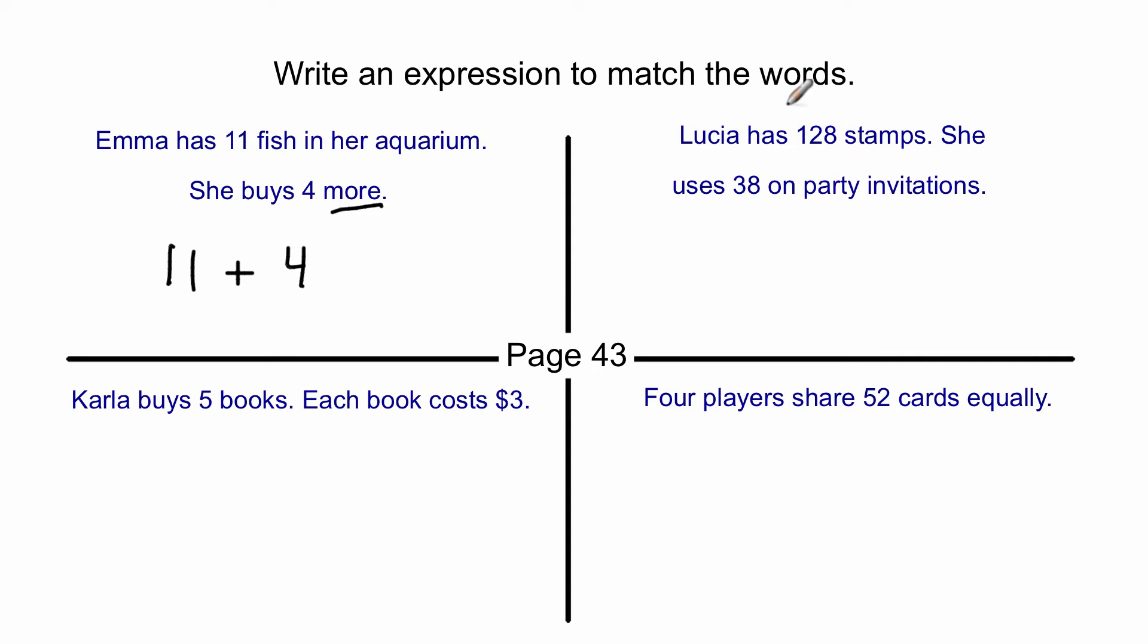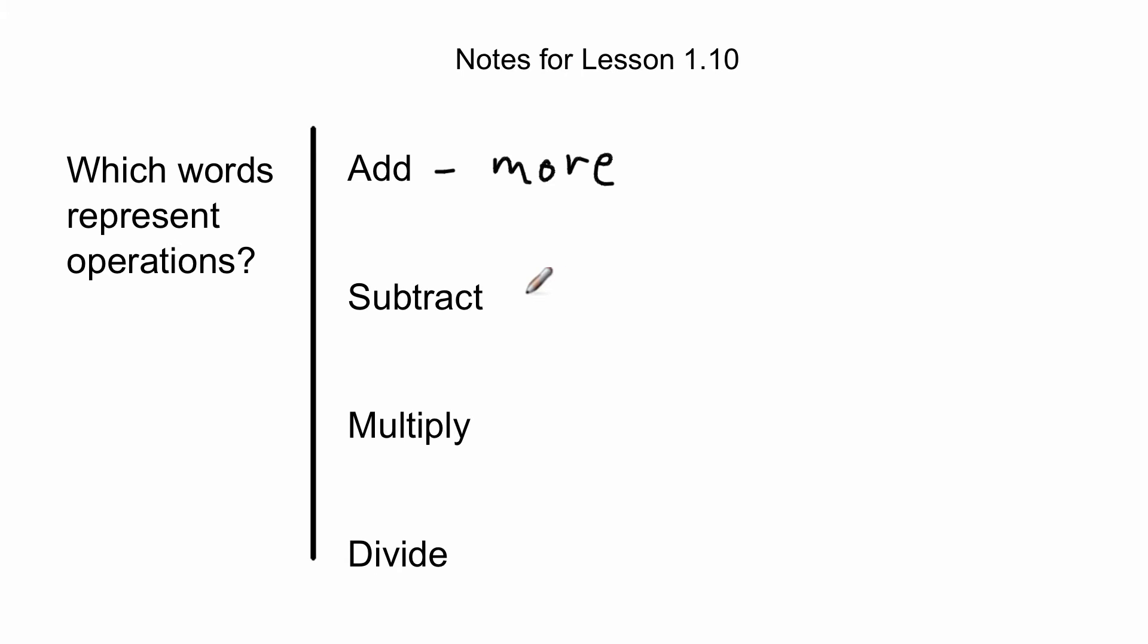Let's go to the right here. Lucia has 128 stamps. She uses 38 on party invitations. So I know the two numbers are 128 and 38, and I just need to know what the operation is. 128. Oh, and she uses them. So she had these and she used that. So she used them up, which means she took them away out of her storage, I guess. And so it's a minus there. So when you use 38, you're talking about subtract.